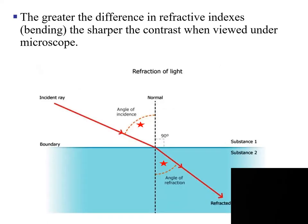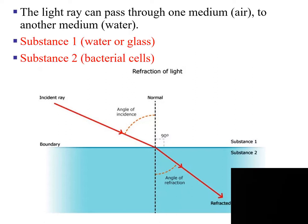The greater the difference in refractive indexes, the sharper the contrast when viewed under the microscope. The light rays can pass through one medium such as air, then through another medium such as the water in a wet mount. One example: substance one would be the water or glass, and substance two would be the bacteria. Light is going to refract as it goes through these different mediums — the first being the glass, the second being the bacterial cell.